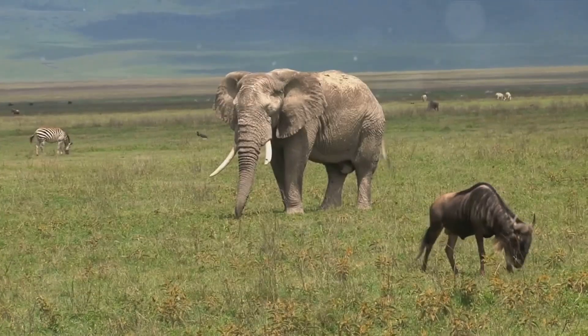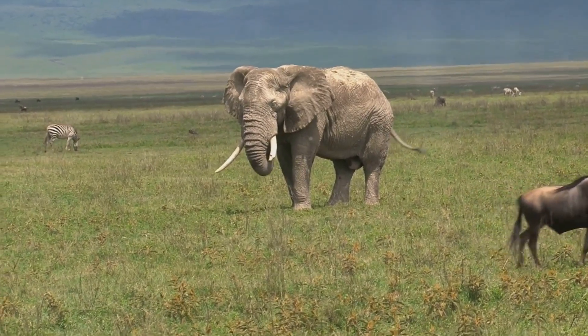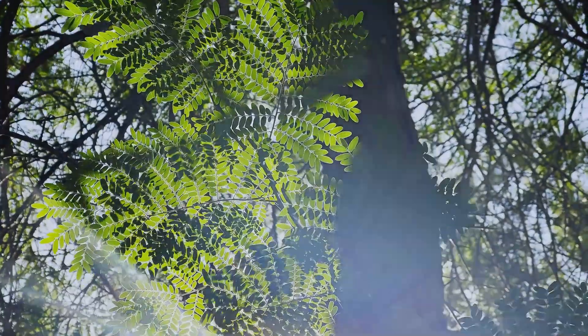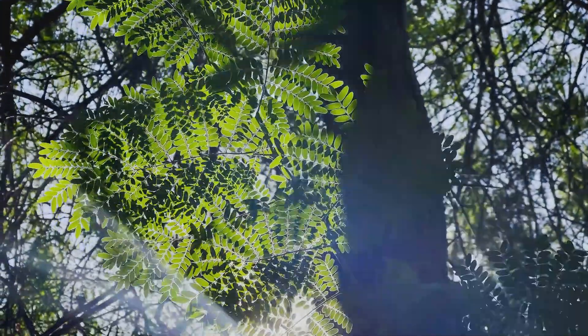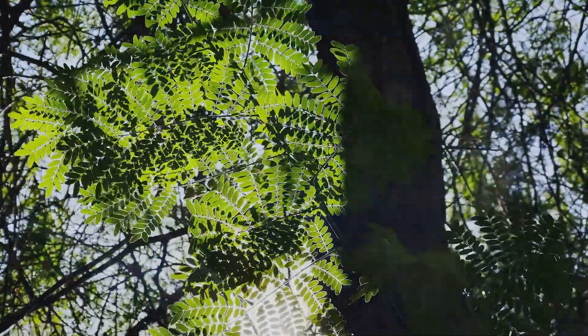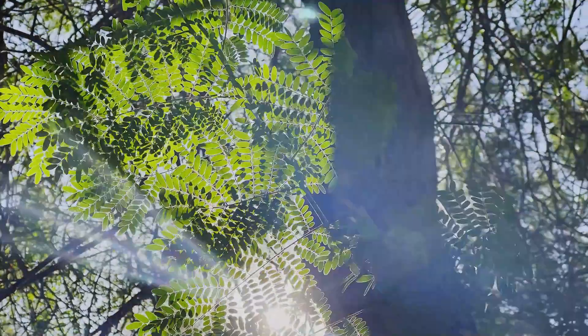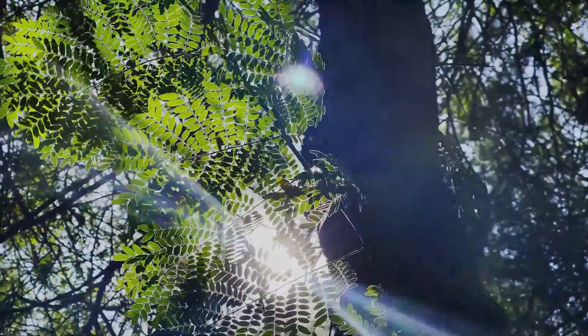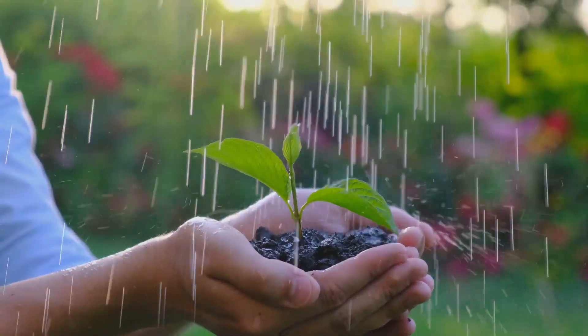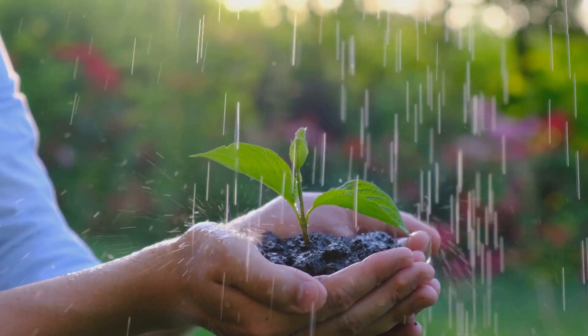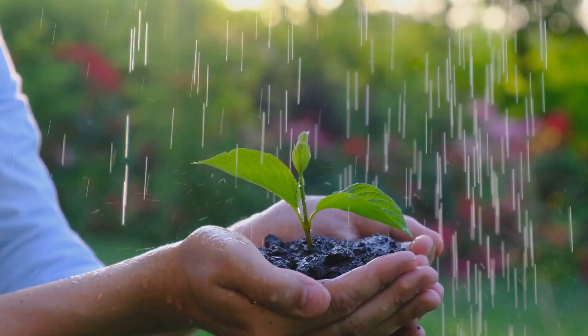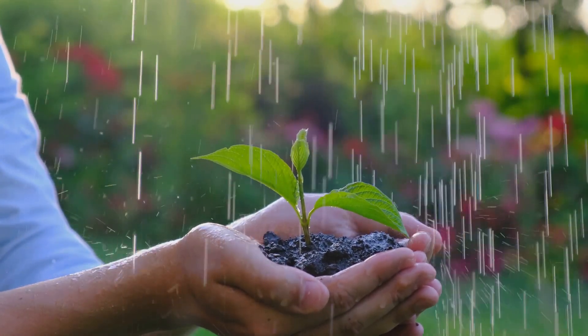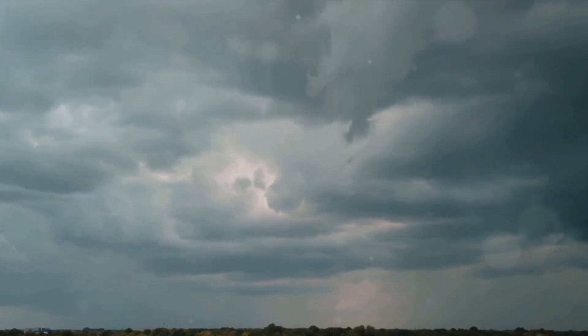The low entropy energy from the Sun fuels the processes that allow plants to grow, herbivores to eat those plants, and carnivores to eat those herbivores. It powers the weather systems that bring rain to nourish the plants, and the geological processes that create the very soil in which they grow. So, in a very real sense, the flow of entropy is the flow of life. It's the driving force behind the complex, dynamic, and ever-changing tapestry of life on Earth.